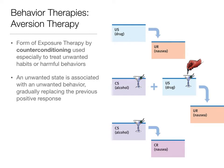Aversion therapy is also counter-conditioning. Here, an unwanted behavior is paired with something adverse to make that person less likely to engage in it again. The unconditioned stimulus would be a nausea-inducing drug paired with the maladaptive behavior — such as cigarettes or alcohol. This is often used for addiction therapy. The person then develops an association between, say, alcohol and nausea, making them less likely to want to drink.